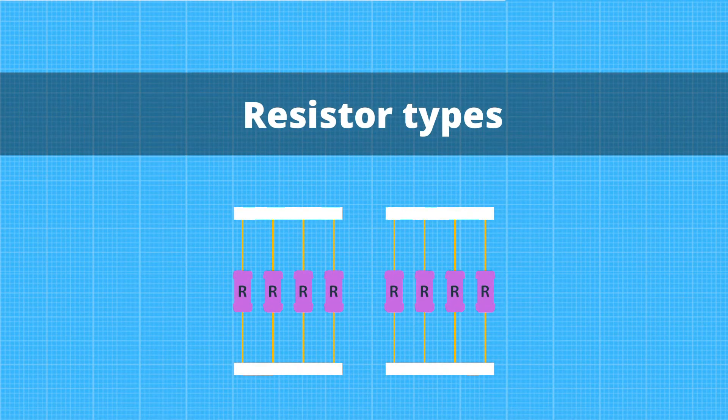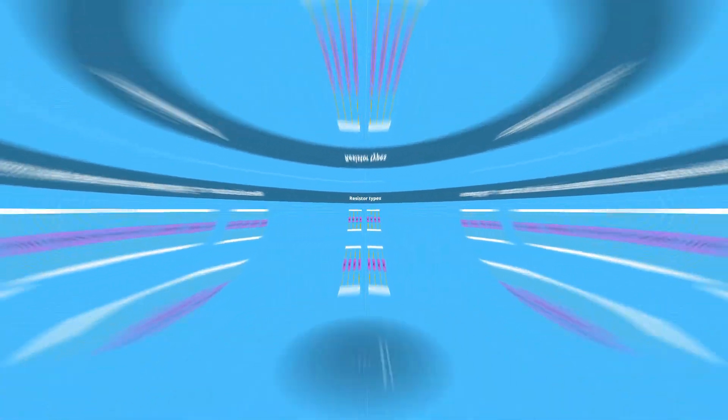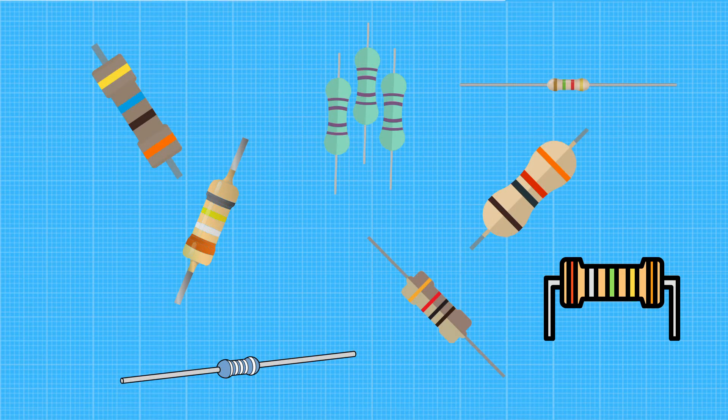Resistor types are available in many different sizes, shapes, power ratings and voltage limits. Knowing the type of resistor is important when selecting resistors for a circuit, because you need to know how it will react under certain conditions.